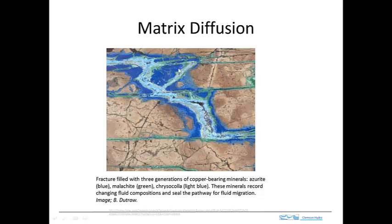Here is an example of that. This is a vein that has copper minerals in it that have weathered out to make these very nice colors, and the vein is right here. What has happened is fluid has flowed along this vein — the vein is fairly narrow — and we've got advection down this fracture and then there's diffusion out of the fracture into this matrix. You can see that copper minerals were involved in the diffusion process because they're now out in the matrix.